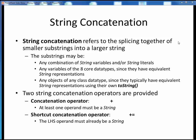String concatenation refers to the act of gluing together smaller individual substrings into one larger string. In these components, substrings may be of any combination of the following types: string variables or string literals, individual variables of any of the core data types since they all have some equivalent string representation, and objects of any class type since all classes typically have some string representation using their own toString method. So really, you can combine just about anything into a string.